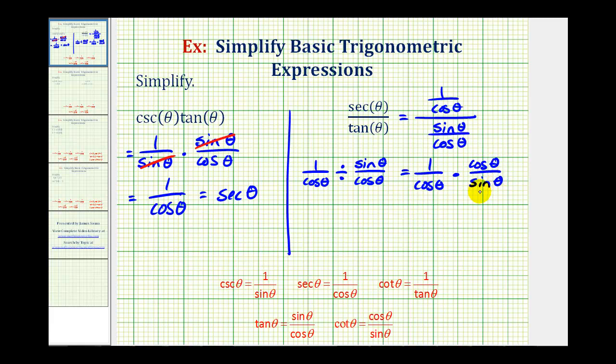And now before we multiply, we should recognize that we have a common factor of cosine. Cosine over cosine simplifies to one. So this leaves us with one over sine theta, and one divided by sine theta is equal to cosecant theta.